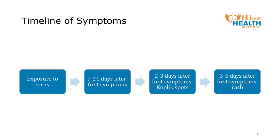Now let's briefly go over the timeline of symptoms one can expect to experience when infected with measles. Following exposure to the virus, the first symptoms of measles occur anywhere from 7 to 21 days after the exposure date. Two to three days after the first symptoms begin, Koplik spots appear. And 1 to 2 days after the Koplik spots appear, or 3 to 5 days after the first symptoms, a rash often shows up. In the next three slides, we will go over what the first symptoms might include, what Koplik spots are and how to identify them, and what the rash looks like and how it may evolve over the course of disease.